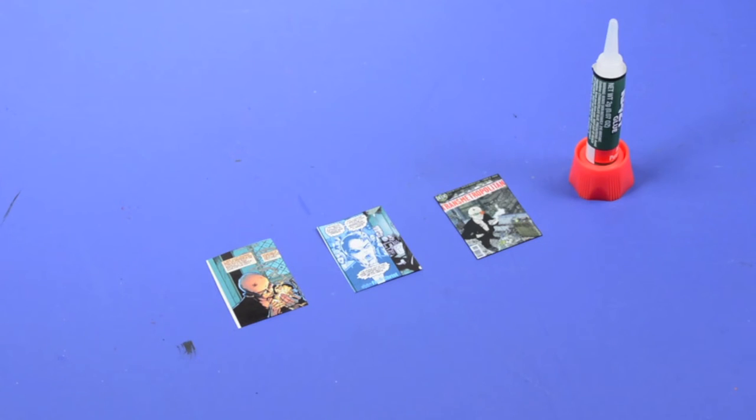So I got lucky and found some mini Transmetropolitan pages. And I had happened to print out Transmetropolitan comic book covers. So now I get to make a couple Transmetropolitan mini comics. And I'm going to be using super glue to assemble the comics. It dries quick and the little nozzle on here makes it really easy to use with small projects like this.